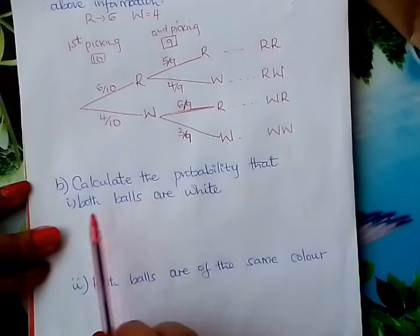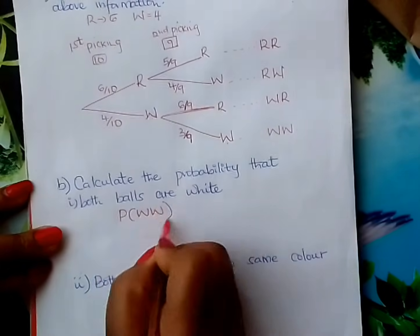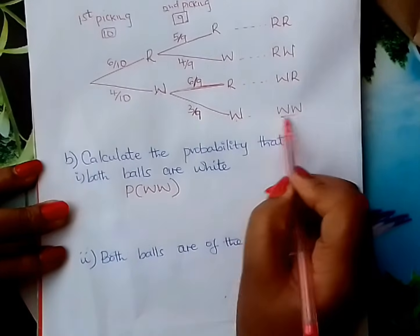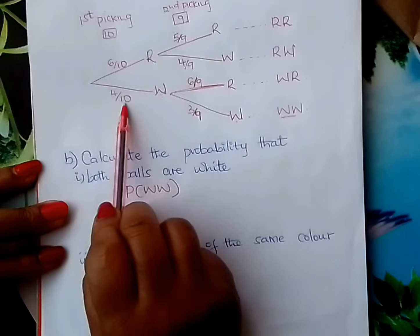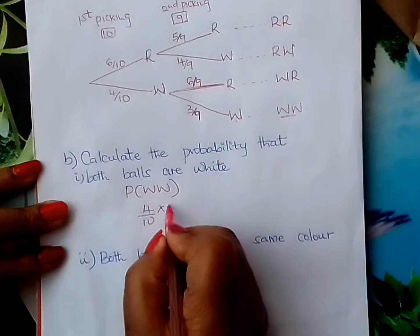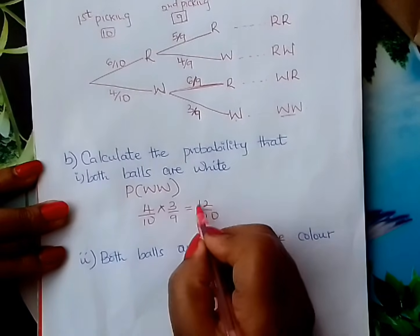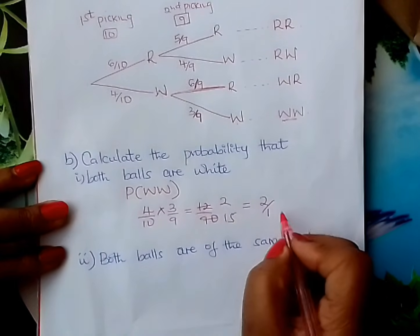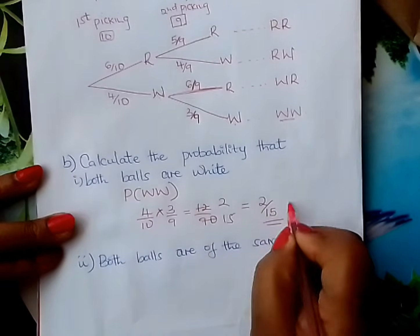Calculate the probability that both balls are white. We write it as P(WW). We follow the white-white branch and multiply the two fractions: 4 over 10 times 3 over 9 gives us 12 over 90. Reducing by 6, this gives 2 over 15. So the probability of picking two white balls is 2 out of 15.